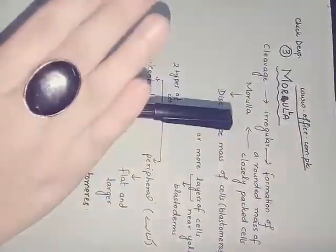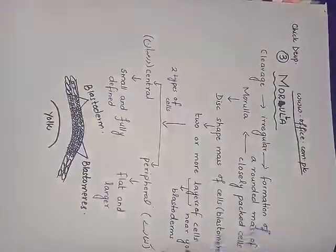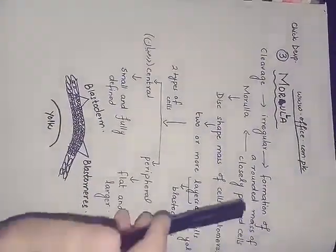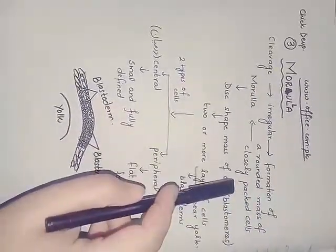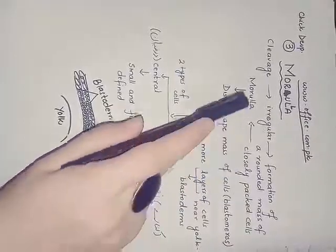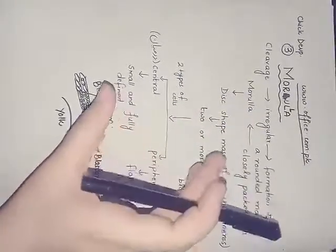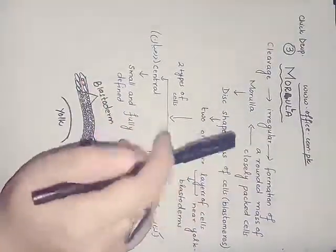This results in very fast growth in the number of cells, ultimately forming a rounded mass of closely packed cells. These cells are known as blastomeres, and this closely packed structure of blastomeres is known as morula.